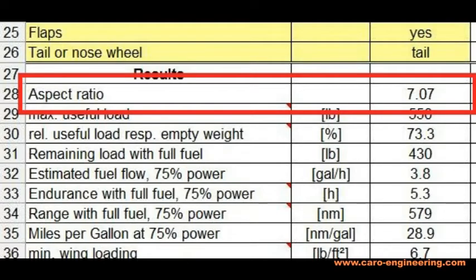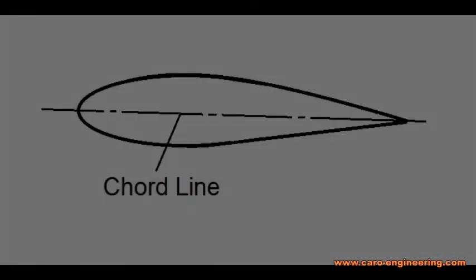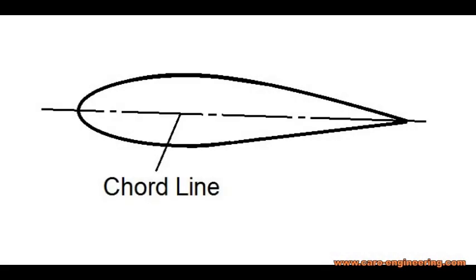While we are on the subject of the wing, I want to introduce two more design features that you will need to decide on: the incidence and the dihedral of the wing. The incidence is basically the angle that the wing is attached to the fuselage with. In order to define an angle, you need two reference lines. The first one is the reference line for the wing — the chord line in the cruise configuration. The airfoil chord line is defined as a straight line from the trailing edge to the center of the leading edge. This line is also used for reference on all aerodynamic calculations.